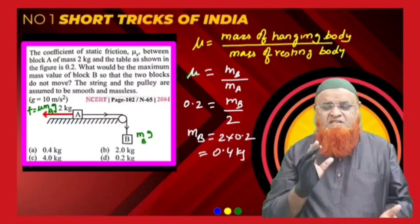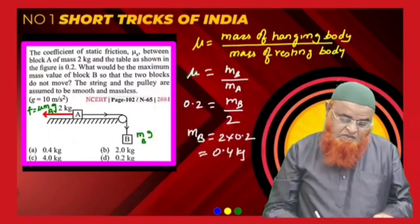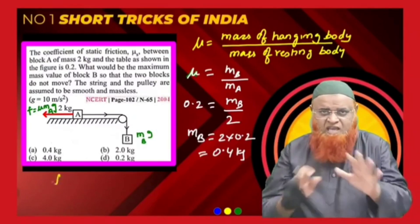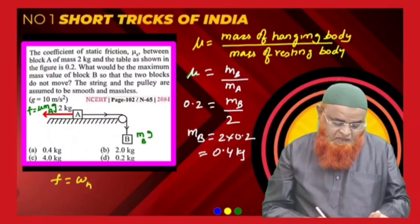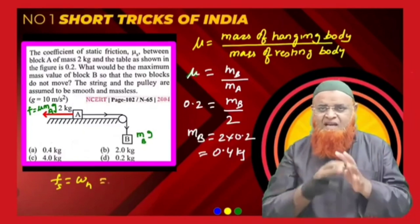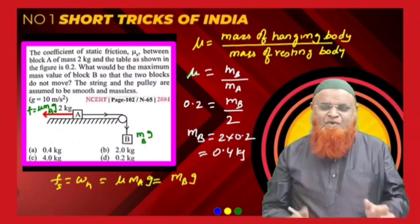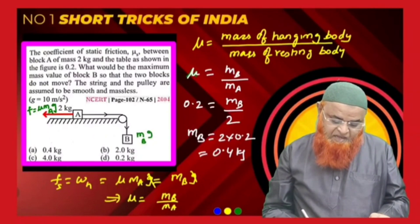Now let's discuss the concept behind this formula. Whenever the bodies are at equilibrium, the downward force and the friction force are the same. So friction force equals the weight of the hanging body — static friction equals MB into g. The static friction formula is mu into MA into g, which equals MB into g. Cancelling g from both sides gives mu = MB / MA.